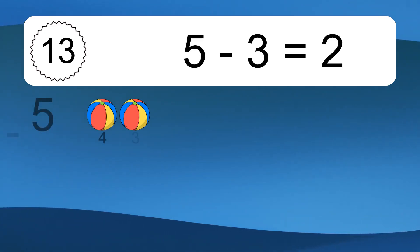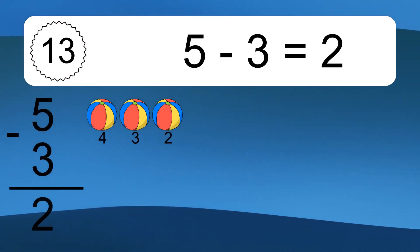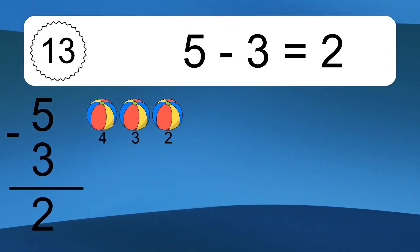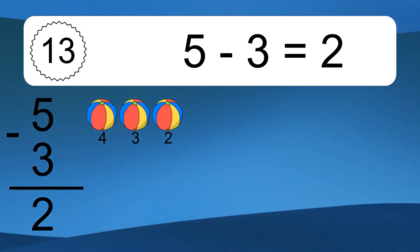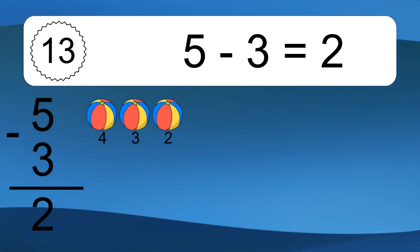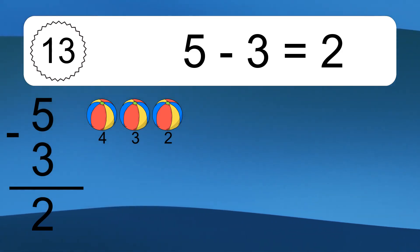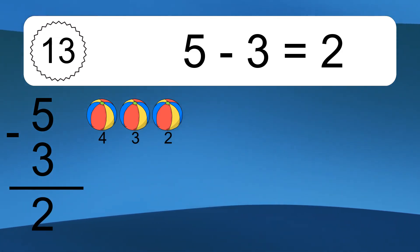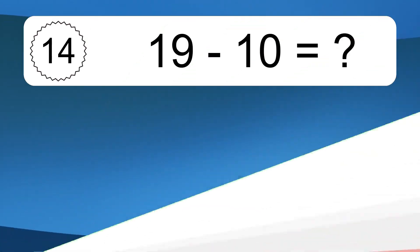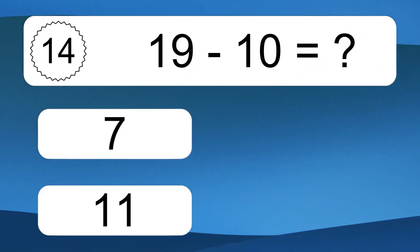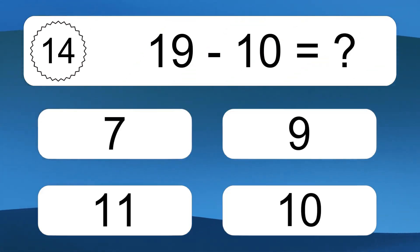5 minus 3 equals what? 5 minus 3 equals 2. Let's count it. 4, 3, 2.